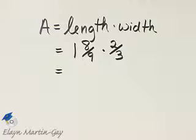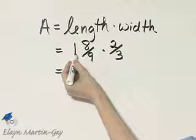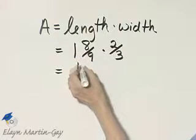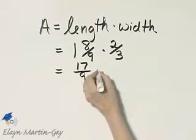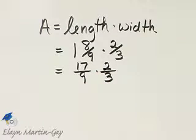First, let's write the mixed number as an improper fraction. Remember what we do, 9 times 1 is 9 and 9 plus 8 is 17 over 9 times 2 over 3. And at the same time, let's look for any common factors.